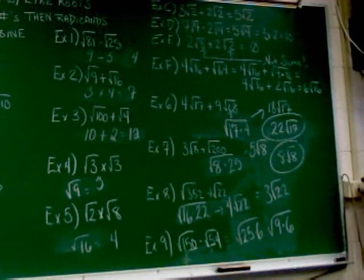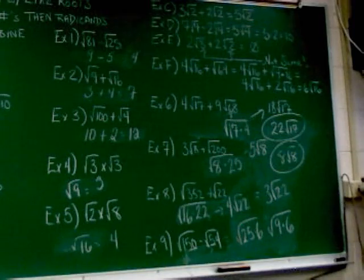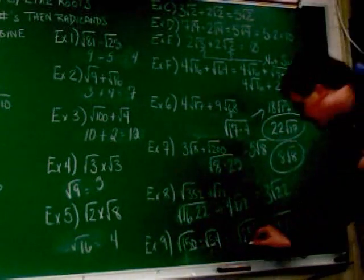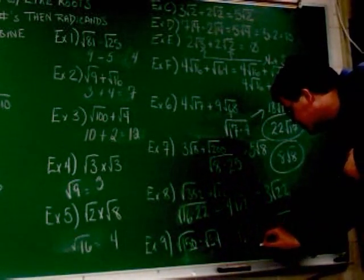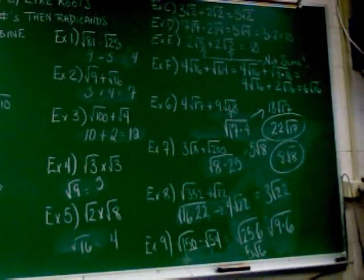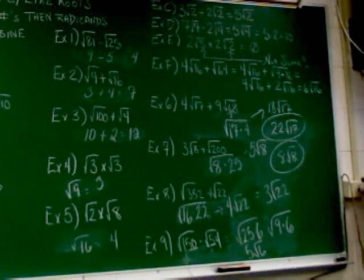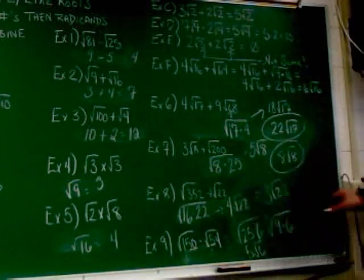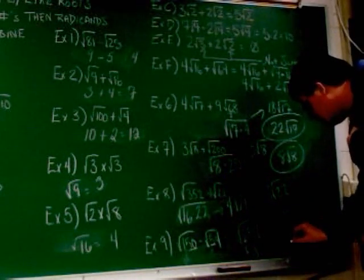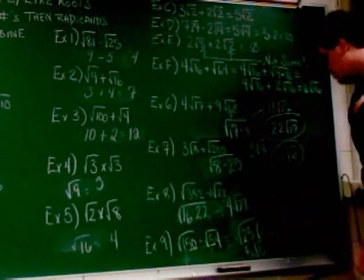150 is 25 times 6. Square root of 25. What's the square root of 25? 5. So, this is the same as 5 times 5 root 6. 9 times 6. Square root of 9. 3. So, that's the same as 3 root 6. And there was subtraction there. So, I'm subtracting those.